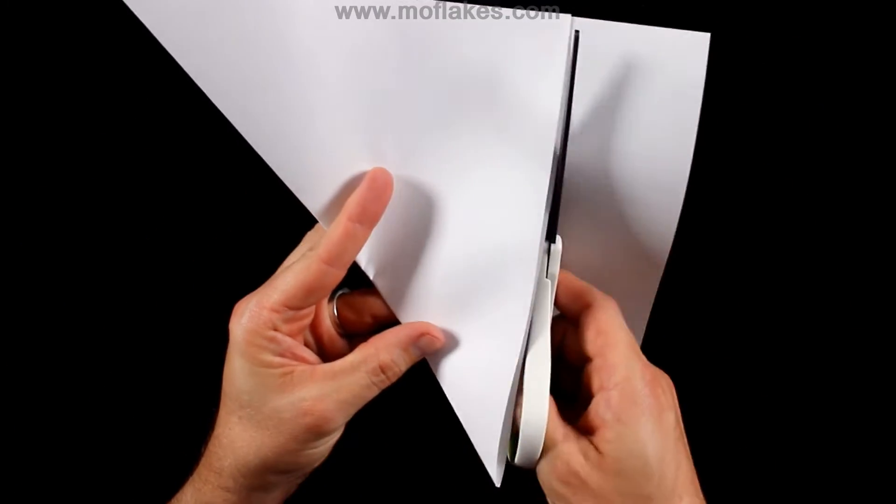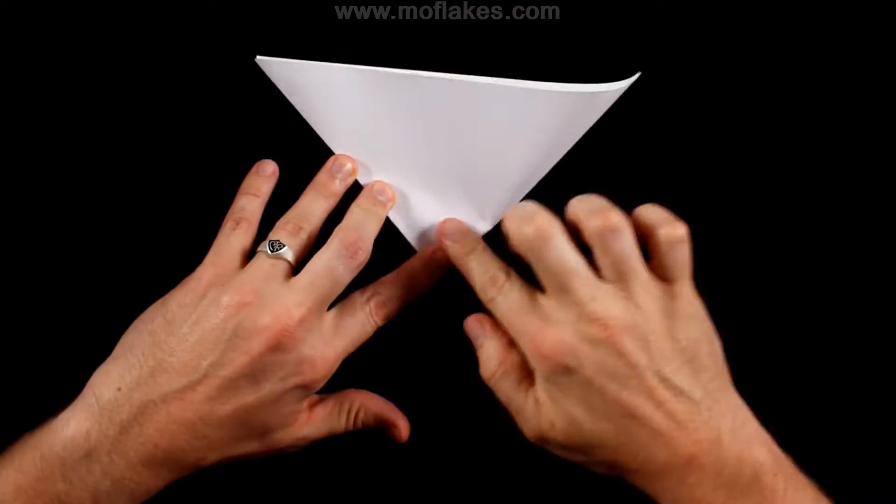Take a sheet of printer paper and fold a triangle. Cut off the extra so that you have a square. Fold it in half to mark the center.